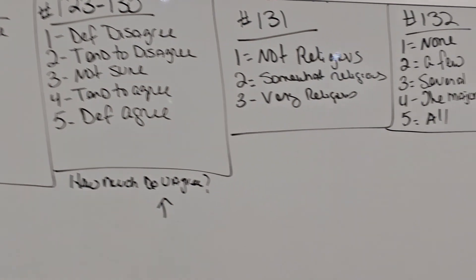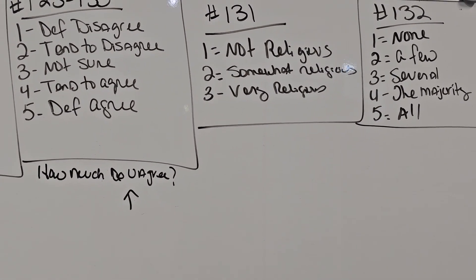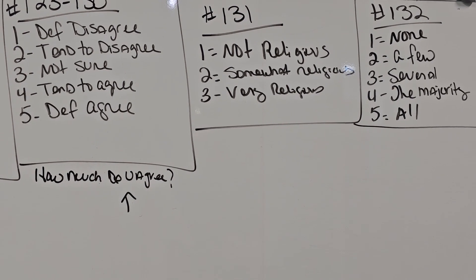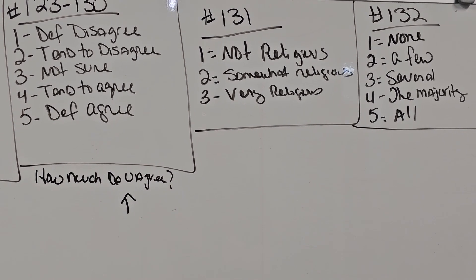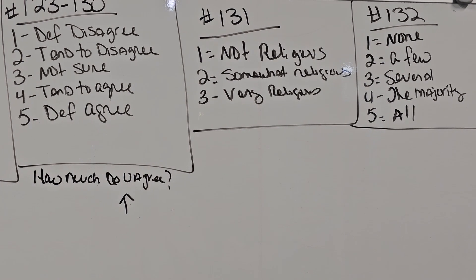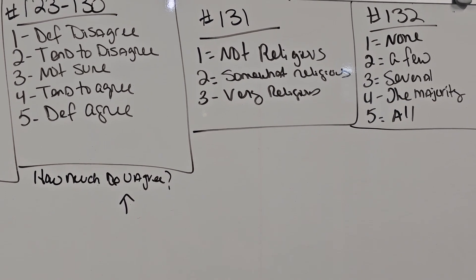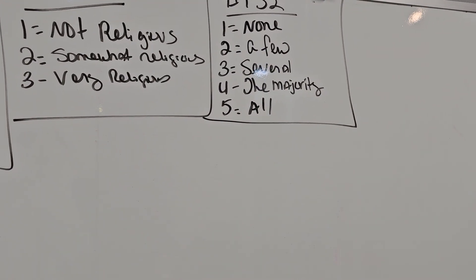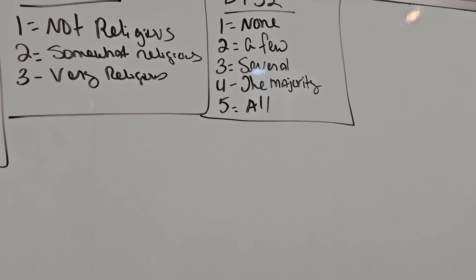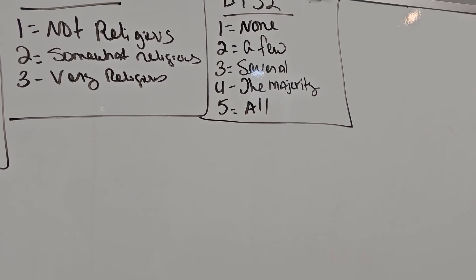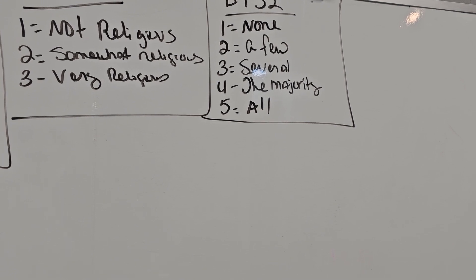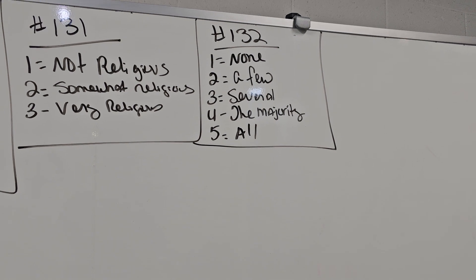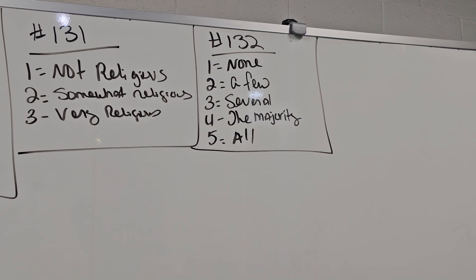Okay moving on to number 131. One is not religious, two is somewhat religious, and three is very religious. 131 how religious or spiritual would you say your three best friends are? And 132, one is none, two is a few, three is several, four is the majority, and five is all. 132 how many of your closest friends are professing Christians?